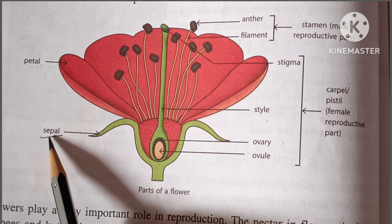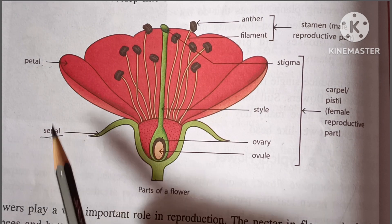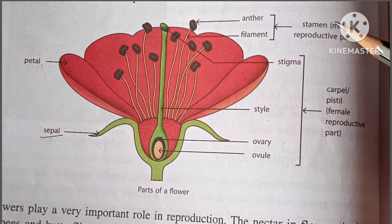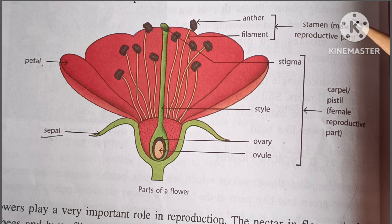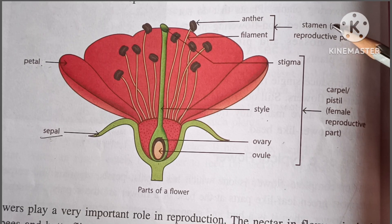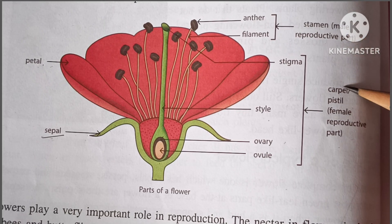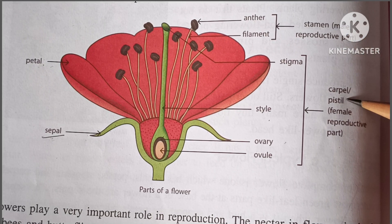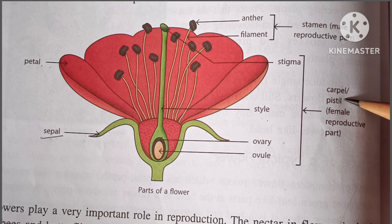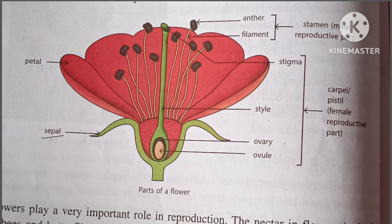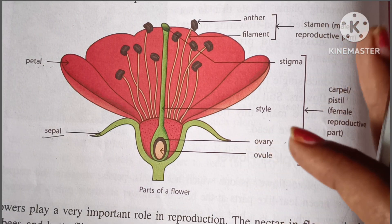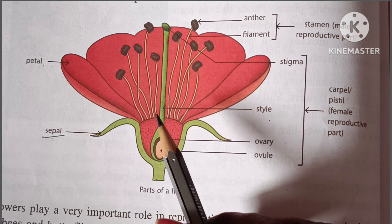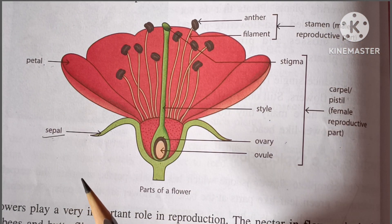That is, first one is the sepal, second one is the petal, third one is the stamen, and fourth one is the carpel, also called as the pistil. These are the four main parts of the flower which help in reproduction.